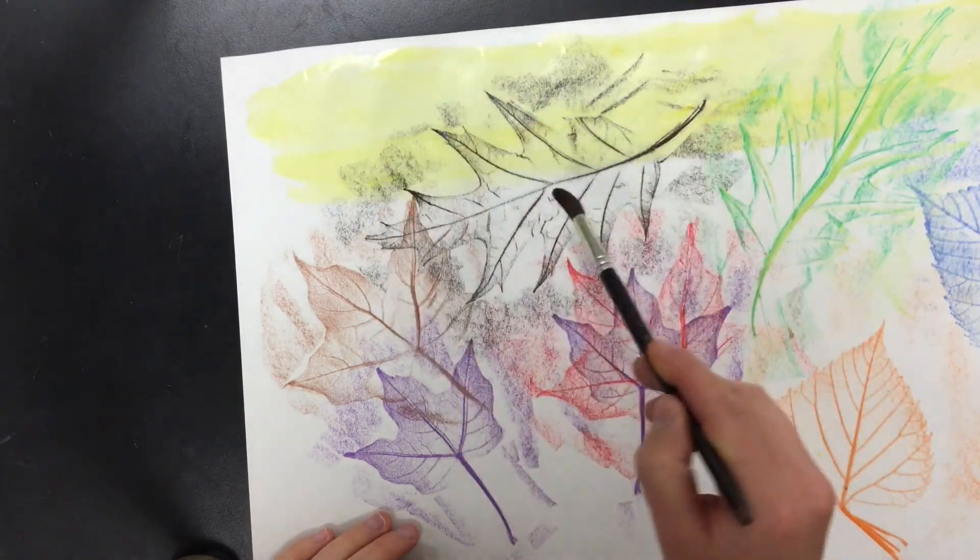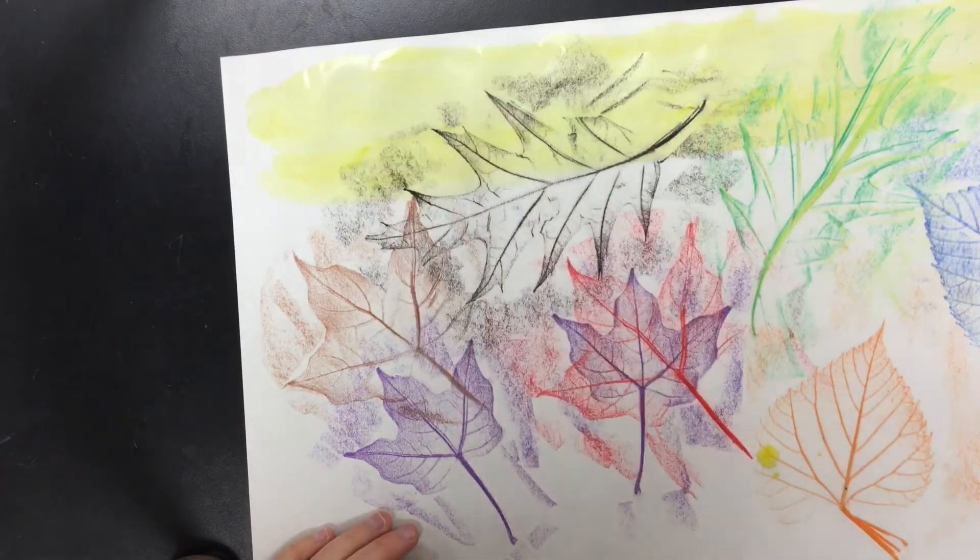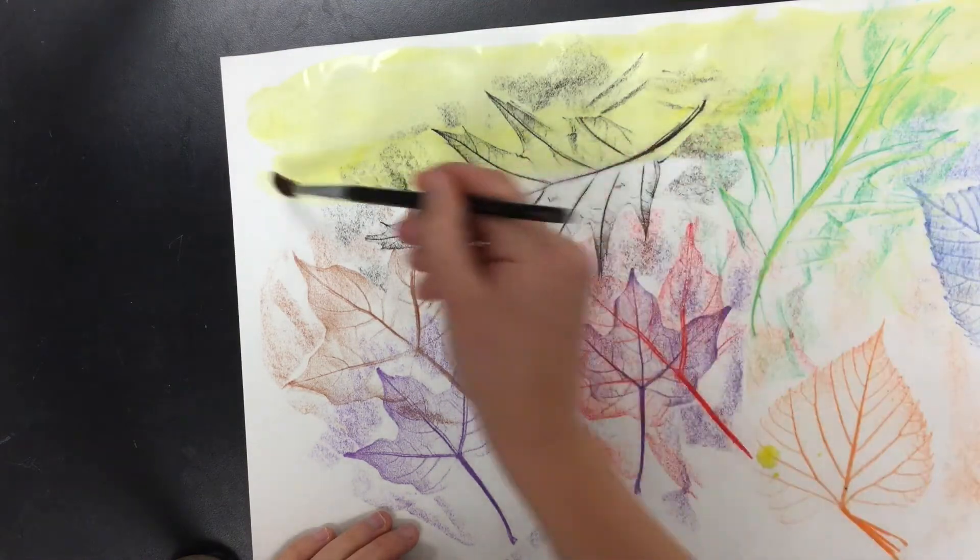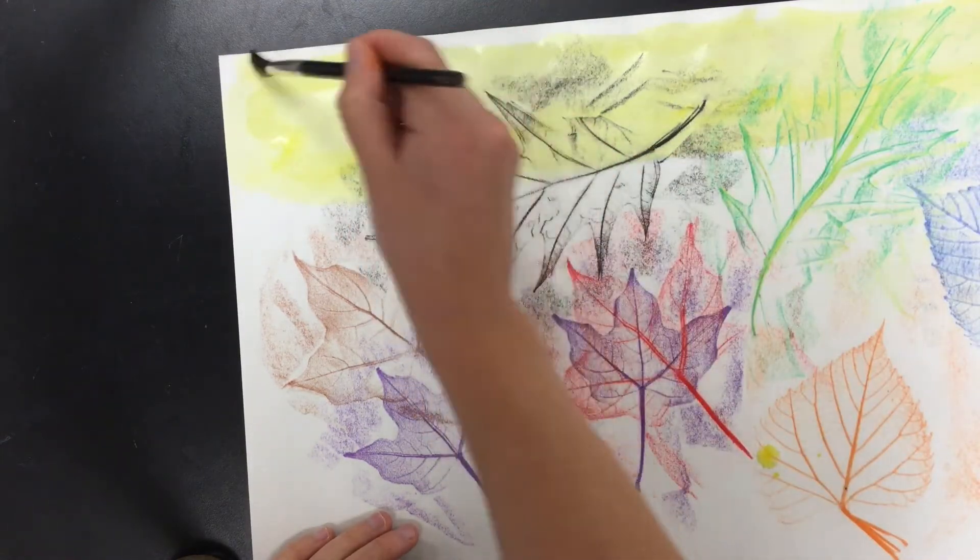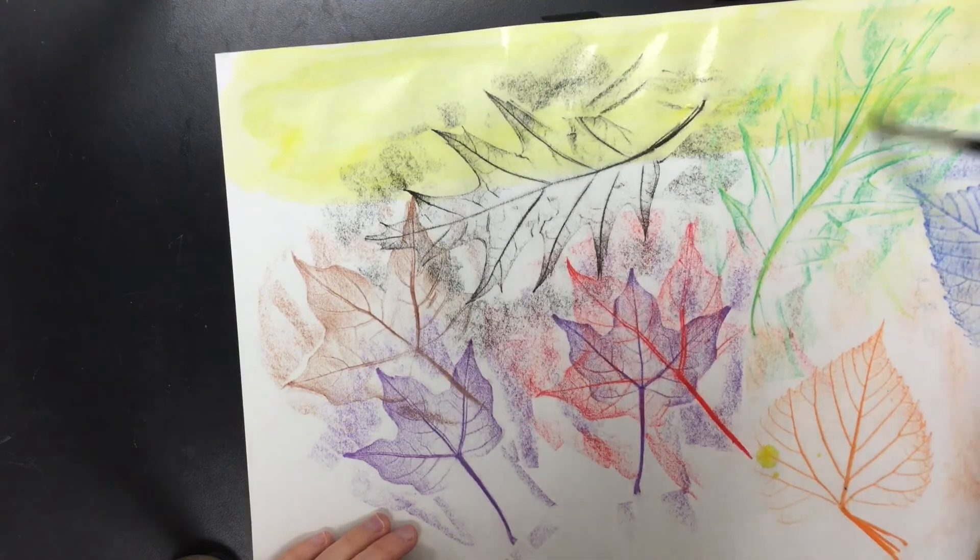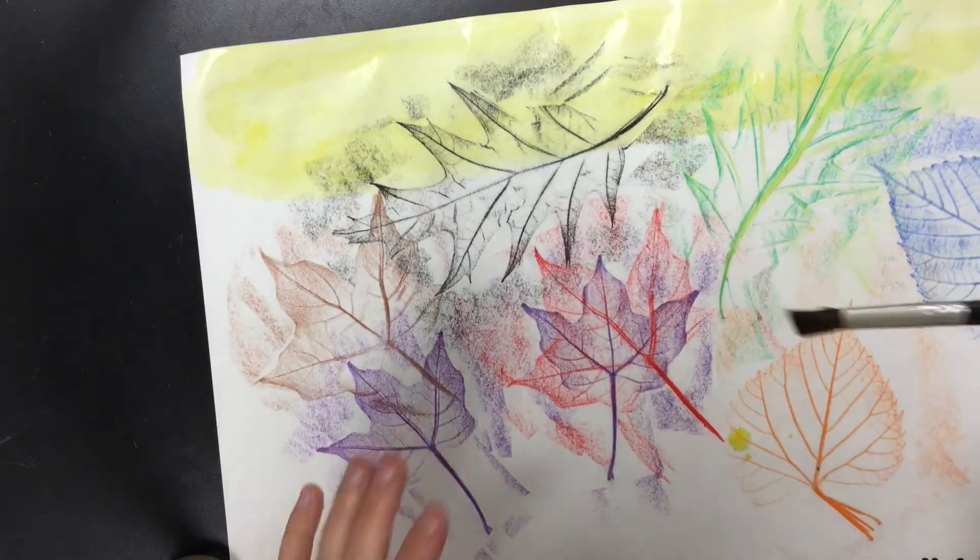This is called a wax resist. Crayons are made of wax so they resist the watercolor. That means that they don't get covered up by it. So I'm gently spreading my yellow on paper.